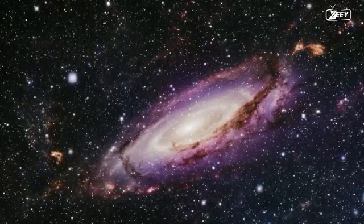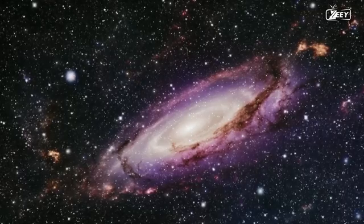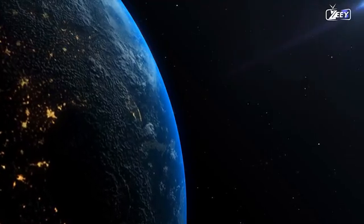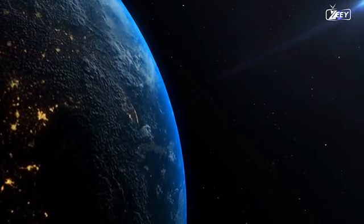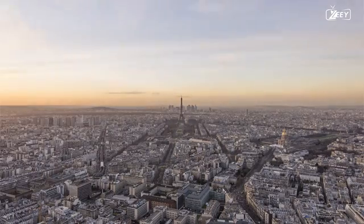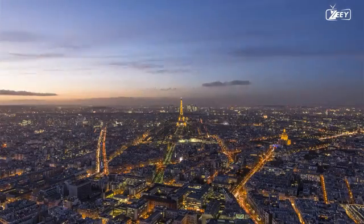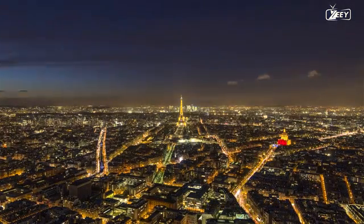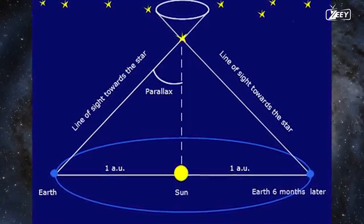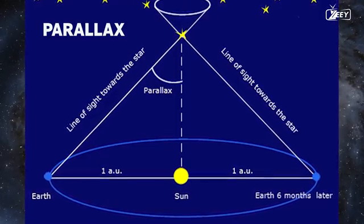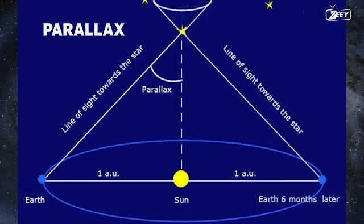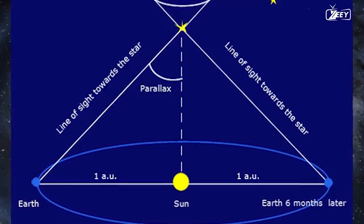Proper motion enables us to comprehend the dynamics of the Milky Way. We can learn about the galaxy's mysteries by studying the movement of stars and their relative locations to one another. And while we're on the subject of motion, consider Earth's perspective. The locations of neighboring stars in the night sky appear to vary gradually over time due to our voyage around the Sun.